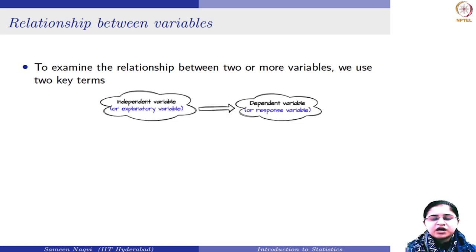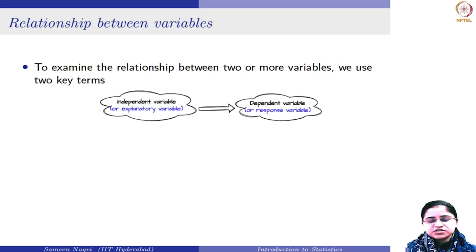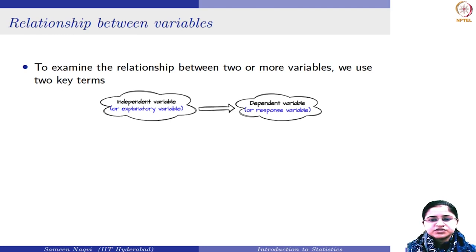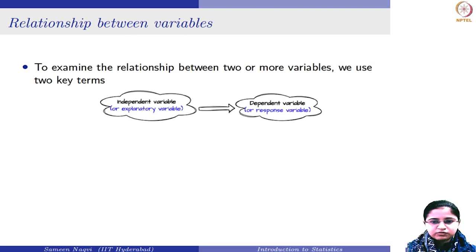Independent variables are also referred to as explanatory variables and are those variables which are under the control of the researcher. The researcher can make changes in this variable in order to see what is the impact on the other variable. On the other hand, you have the dependent variable, which is also referred to as a response variable. These are basically the responses or the outcomes which we measure after making changes in the independent variable.